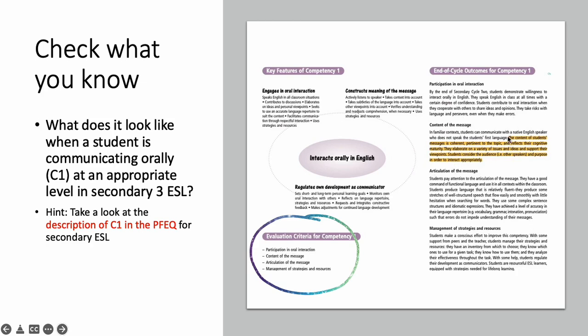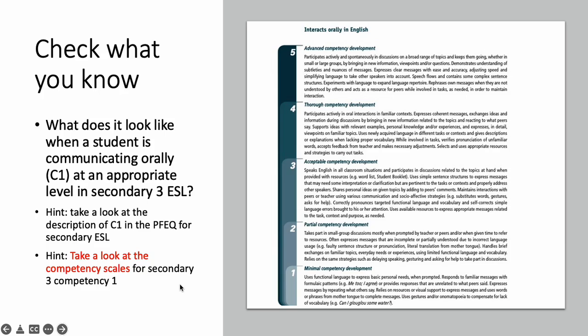And you're going to see that there are descriptors here. The content of the student message is coherent. It's pertinent. They're able to elaborate. They demonstrate a willingness. They speak English in class with confidence. They contribute to oral interaction. They persevere. They have a good command of functional language. They're fluent. Okay, so that's the first thing that we're going to look at. These things in here, participation, content, articulation. Note that we don't grade their management of strategies and resources. When the program was first published, we were expected to do that, but the task proved more or less impossible. So the ministry eventually dropped that. We were asked to give feedback on how they're doing with this, but really we're evaluating these three things.